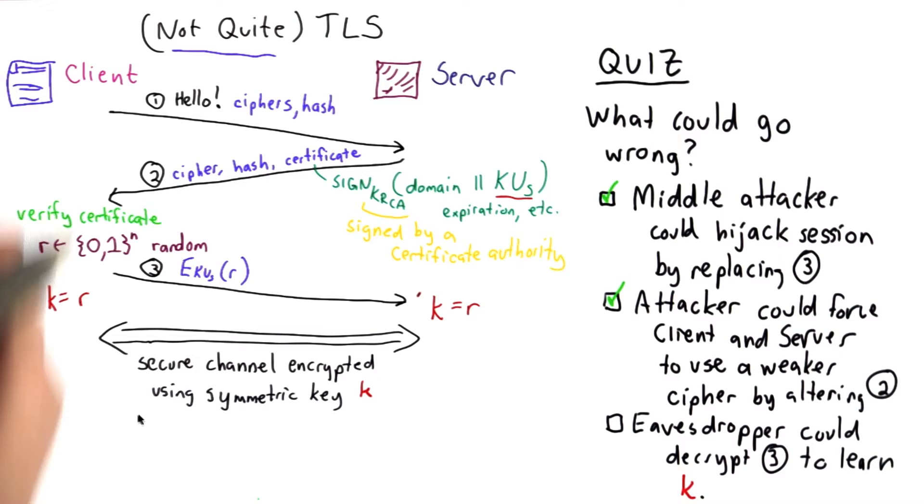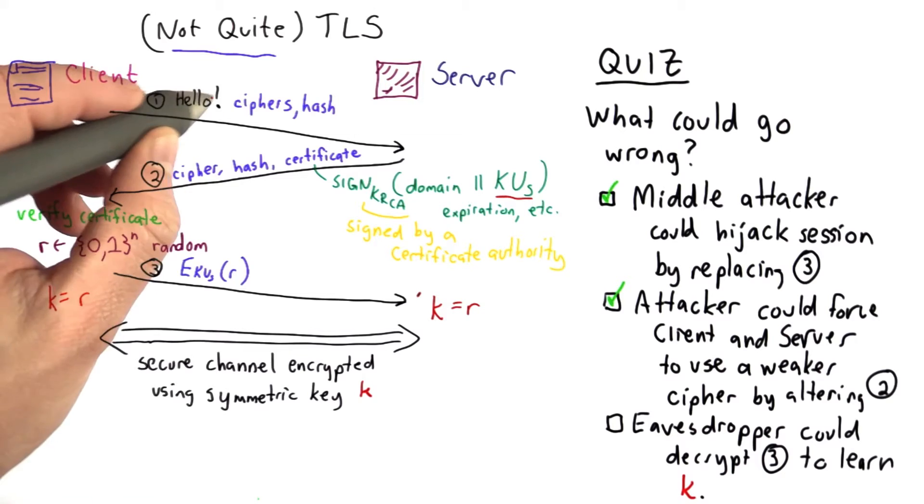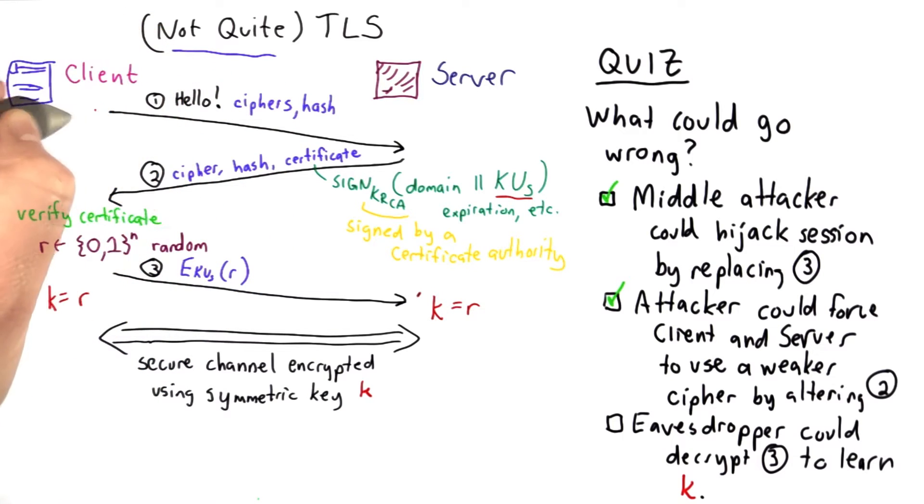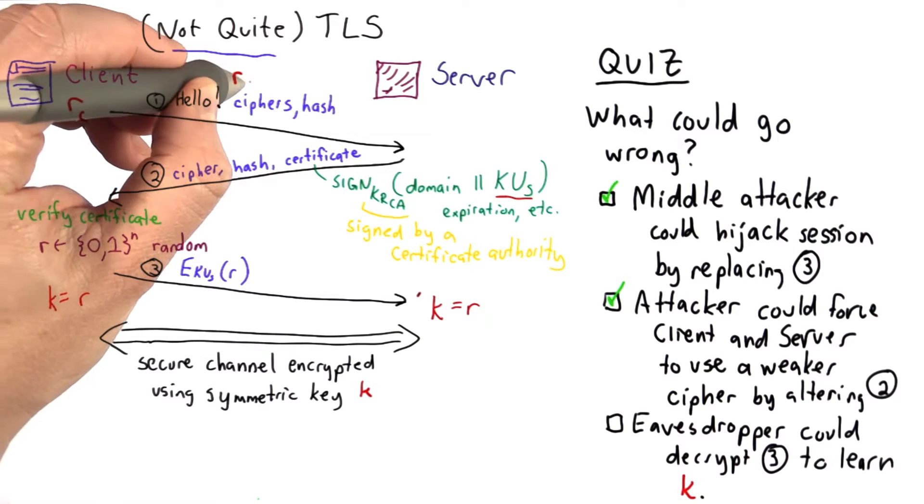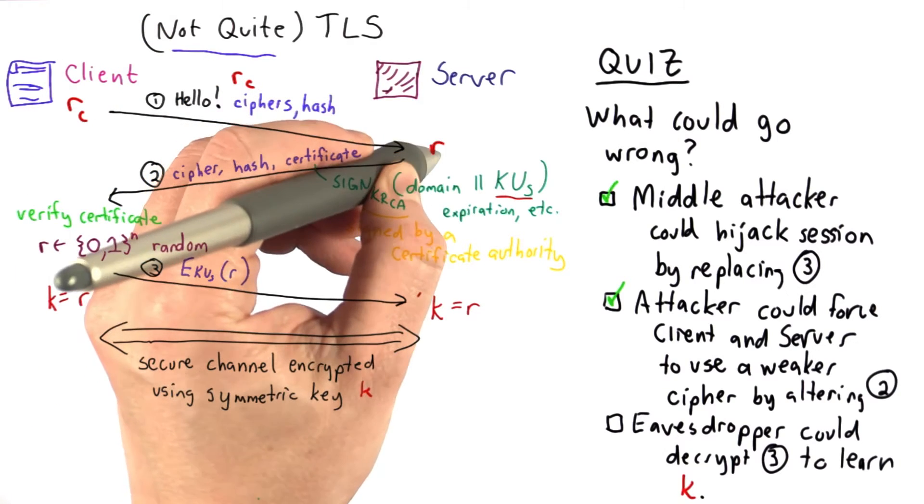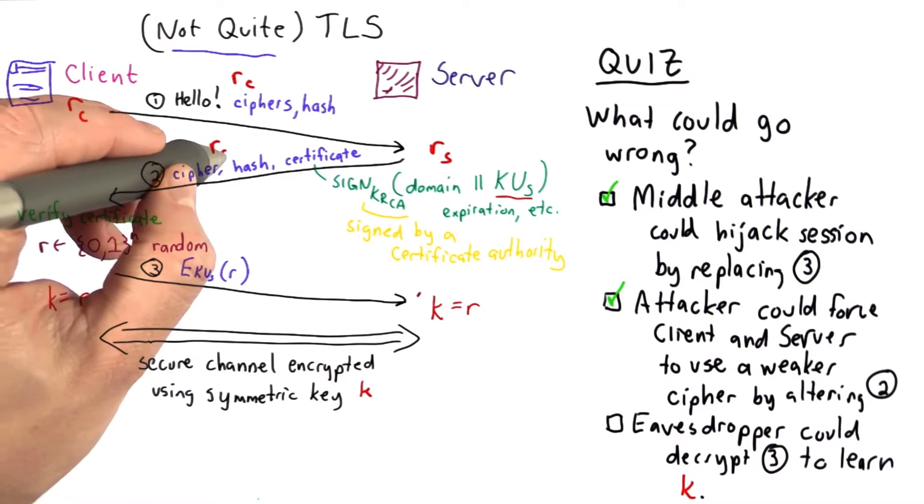So what we're going to do is add extra random nonsense to these steps. So in addition to the messages here, the client will generate a random value, we'll call that rc, that will be added to this message. The server will generate a random value rs that will be added to this message.